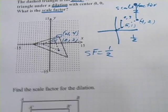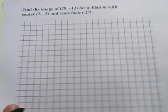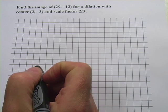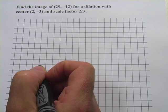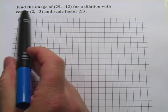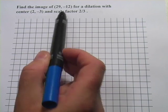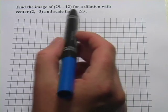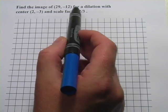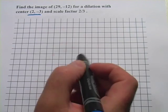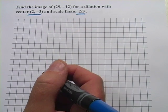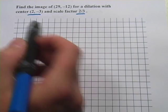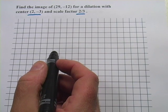All right, let's try one more, and this is one of the harder ones. You can also have a dilation where the center is not (0,0). And then you have to do one extra step of calculating. So this one says find the image of (29, -12). So that's a point. We've just got one point to deal with, not like a whole triangle or something. So that's good. Find the image of that point for a dilation with center (2, -3) and a scale factor of 2/3. So we're going to be multiplying something by 2/3 to get our new coordinate, but it gets complicated because our center is not (0,0).